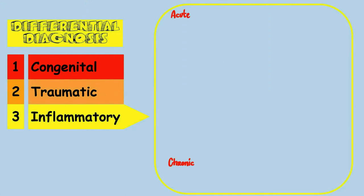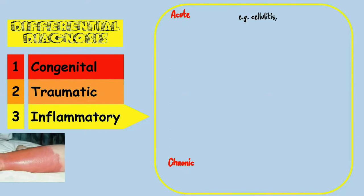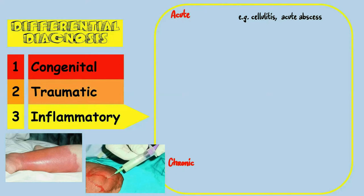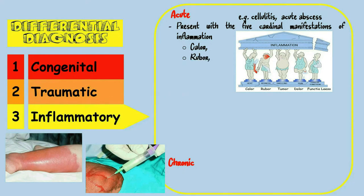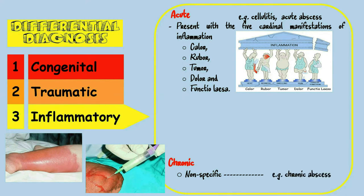Inflammatory swellings may be acute or chronic. Usually the acute inflammatory swellings are non-specific, while the chronic ones are usually specific. Examples of acute non-specific inflammatory swellings are cellulitis and acute abscess. Acute inflammatory swellings present with the five cardinal manifestations of inflammation: calor (local hotness), rubor (local redness), tumor (swelling), dolor (pain), and functio laesa (loss of function of the affected part). Chronic inflammatory swellings may be non-specific, like chronic abscess, but mostly they are specific, like tuberculosis and syphilitic lesions.